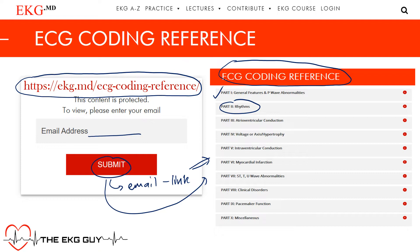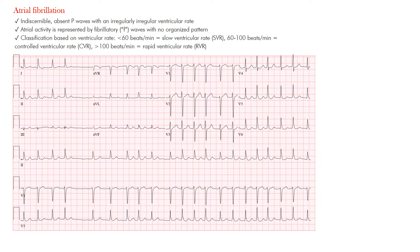Atrial fibrillation is a common topic that a lot of us want to know how to identify, because this has the ability to change patient management if we can identify and document it. So what is going on in this case? This is random chaotic atrial firing, and because of that what we see on the EKG is indiscernible, absent P-waves with an irregularly irregular ventricular rate.